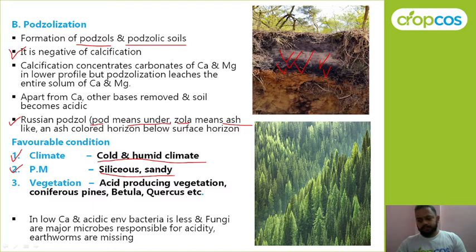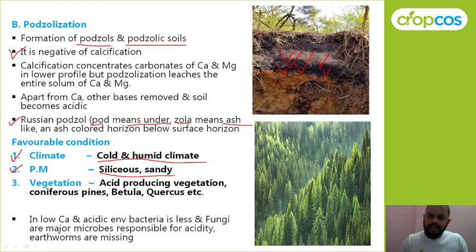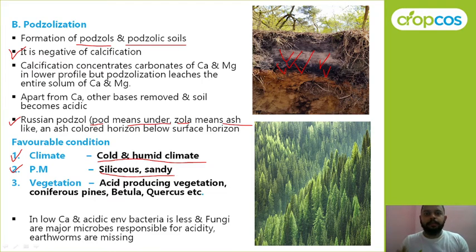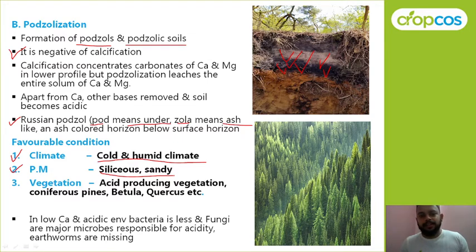Next is vegetation. Basically, acid-producing vegetation is important — for example, coniferous species, betula, and other such plants. You should know the name of coniferous species especially, as it is important in many exams. In semester exams, you can be asked for comprehensive or brief answers about conditions supporting porzolization, so you must mention all these points.